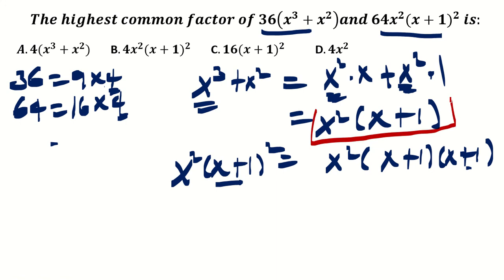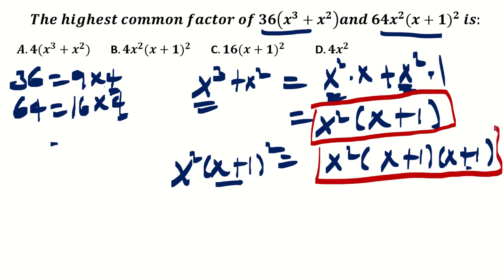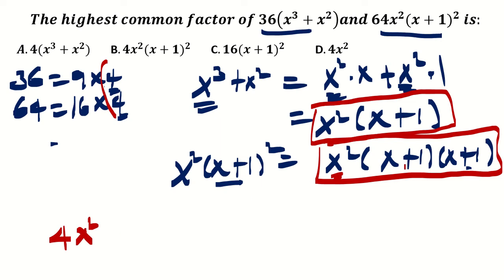Now try to see the first expression and the second expression. For these two expressions, there is a common x². The common number is already 4. So now we are trying to extract the highest common factor. From the numbers we already have 4. And x² also exists in both, so it will be taken. And x plus 1 exists in both — in the second expression it appears twice, but we'll take just one of it, because we are taking the common factor.